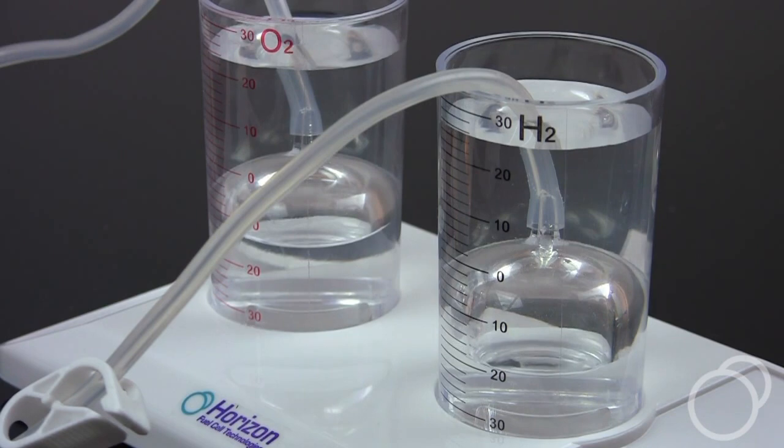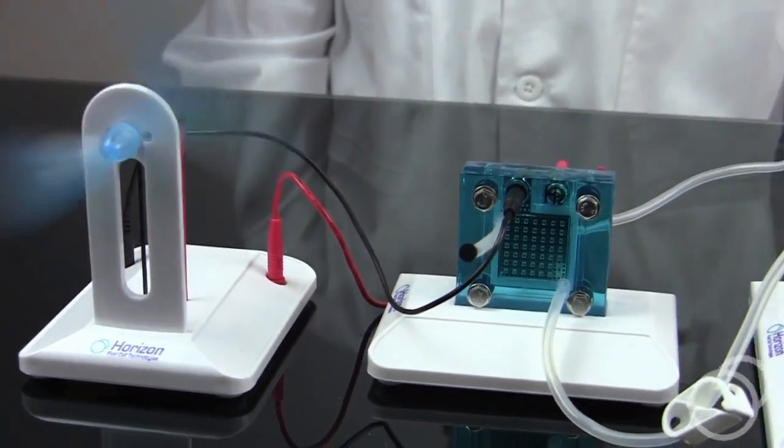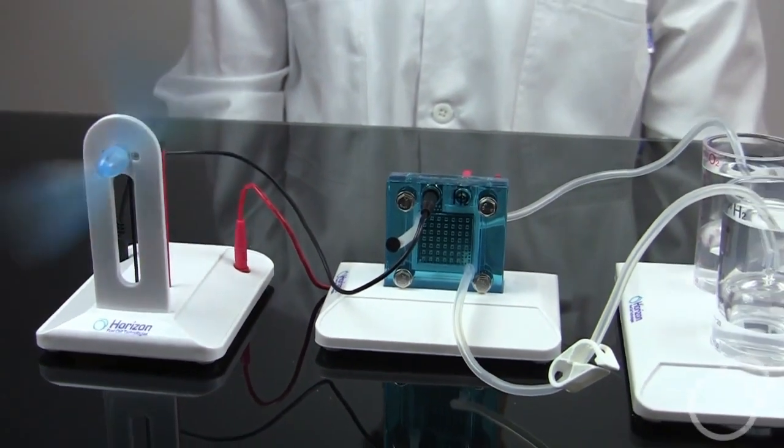Once enough hydrogen has been collected, the fuel cell can work in reverse to generate electricity by recombining the hydrogen and oxygen from the cylinders.